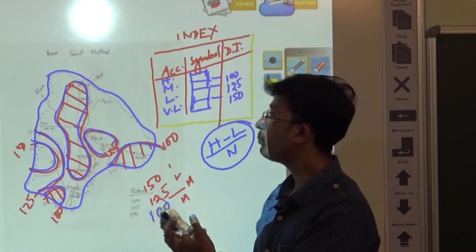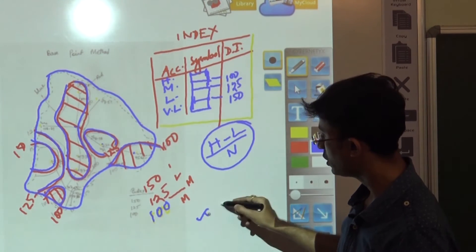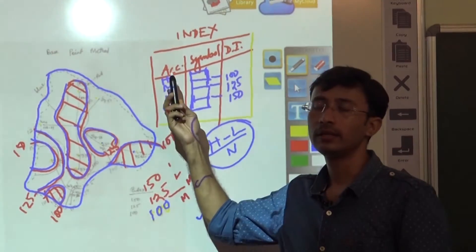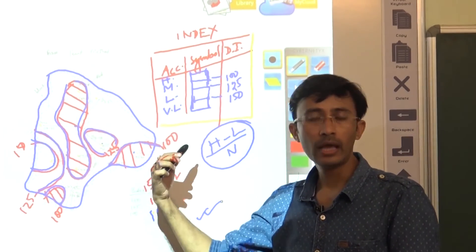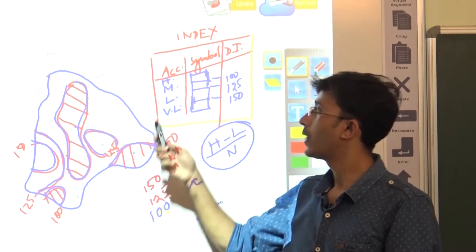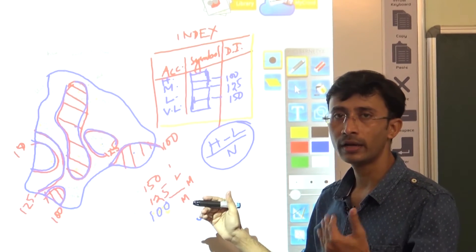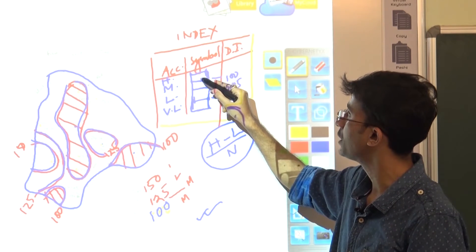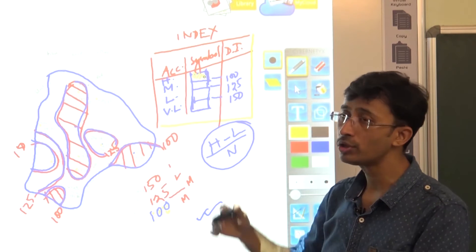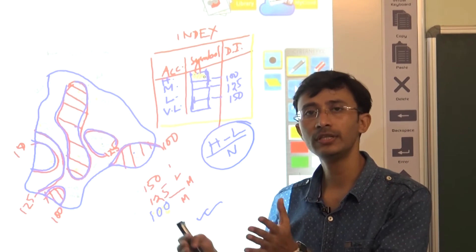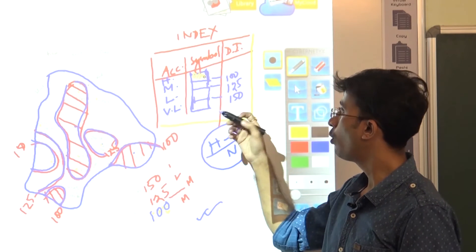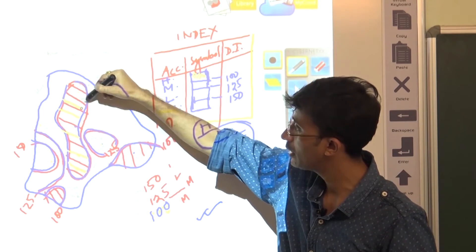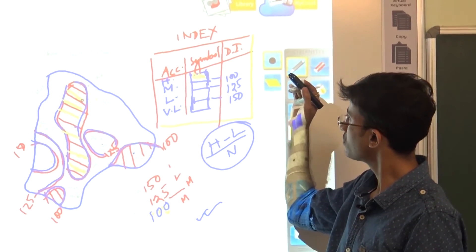From this type of map, we prepare an index. The index is drawn in this portion and must mention three important things: the accessibility symbol and the Deterinders value. In this case, we found values of 100, 125, and 150, giving a total of 4 accessibility zones. We know that the lower the Deterinders value, the greater the accessibility. Therefore, the most accessible area is where the value is below 100.